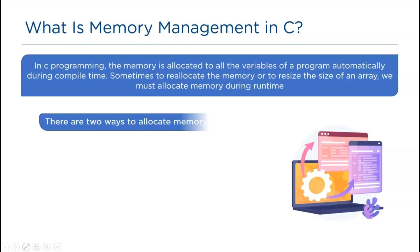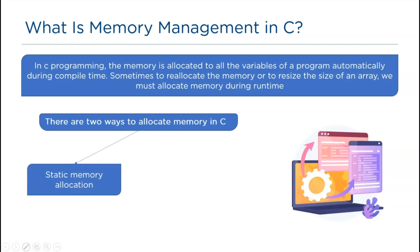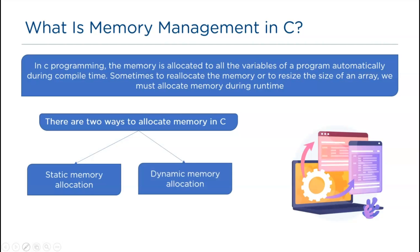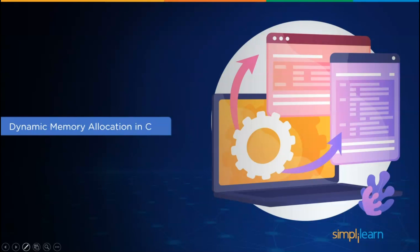We have two ways to allocate memory: static memory allocation and dynamic memory allocation. In static memory allocation, memory is allocated during compile time and a fixed size of memory is assigned to variables — there is no change in memory size or location. In dynamic memory allocation, memory is allocated during runtime.